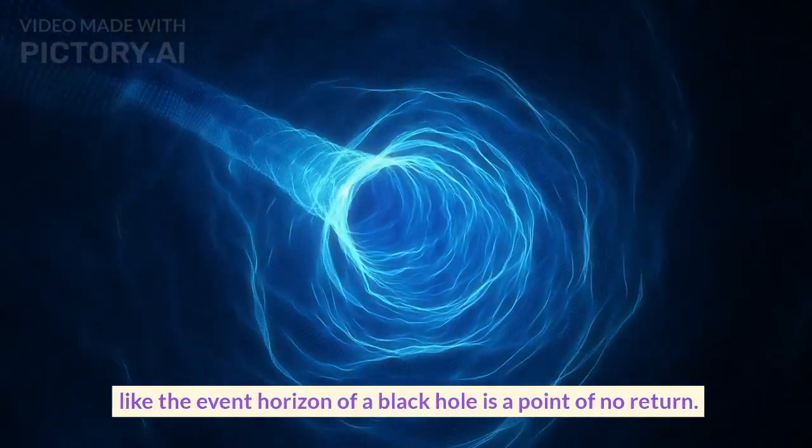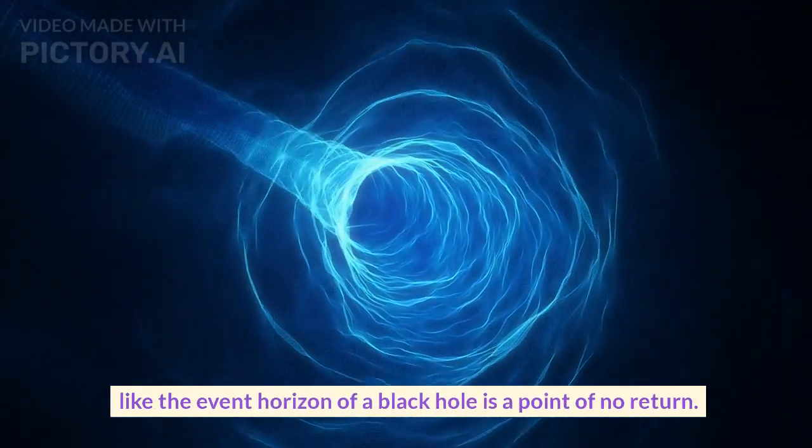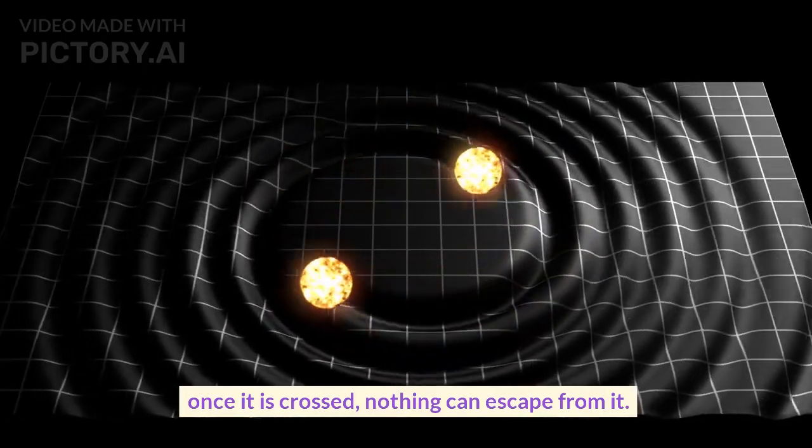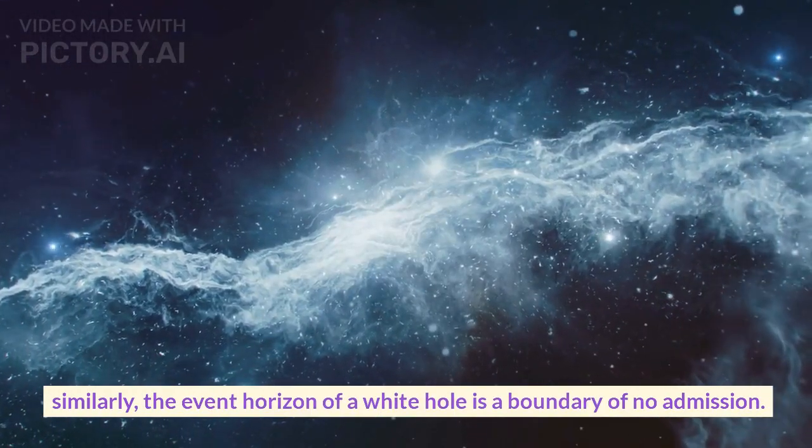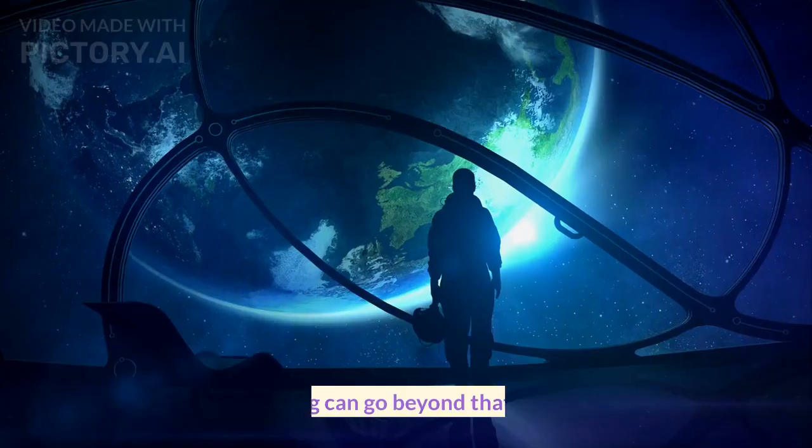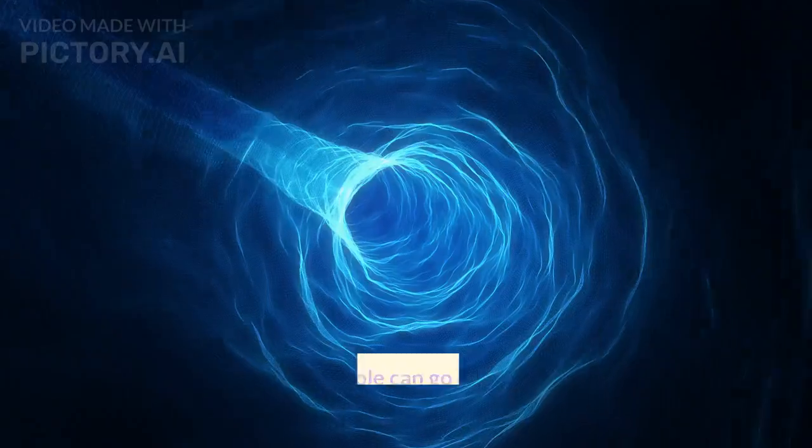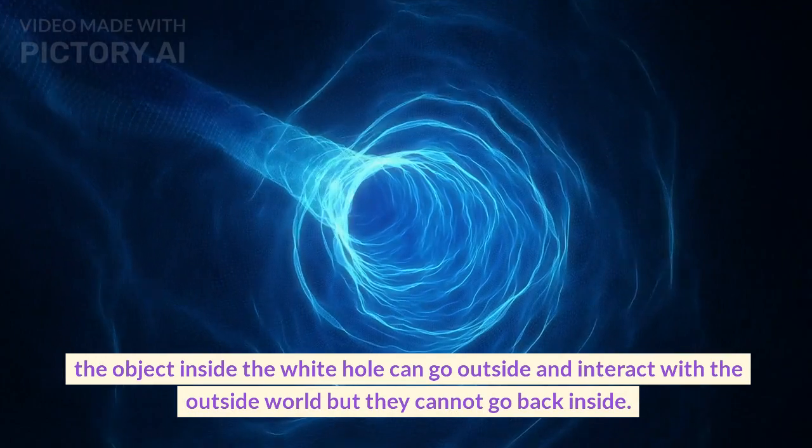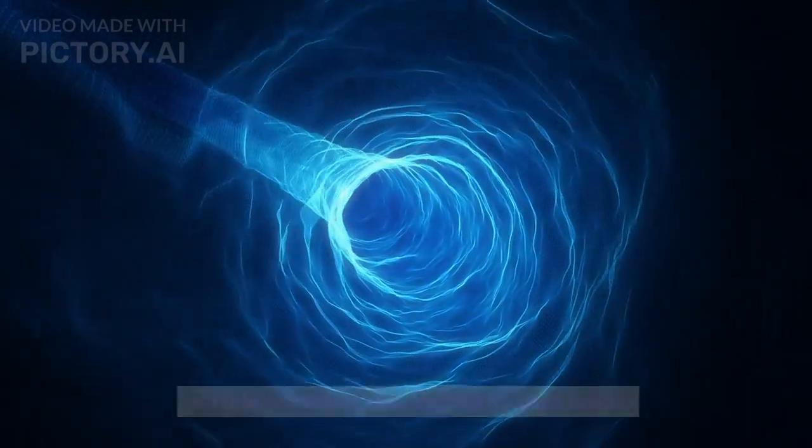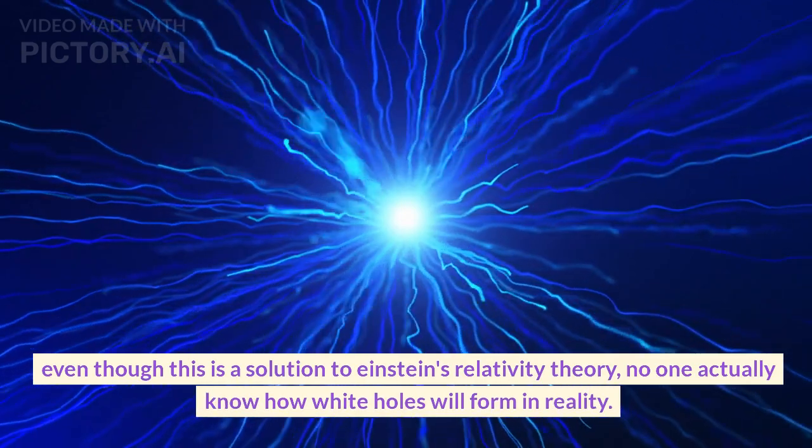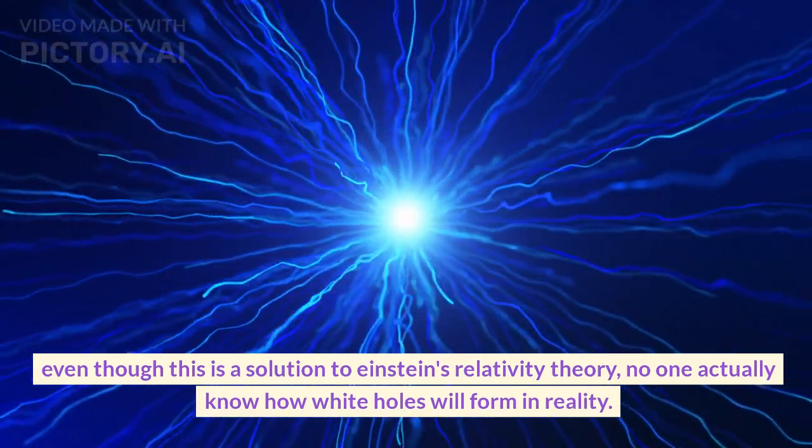Like the event horizon of a black hole is a point of no return—once it is crossed, nothing can escape from it. Similarly, the event horizon of a white hole is a boundary of no admission. Nothing can go beyond that point. The objects inside the white hole can go outside and interact with the outside world, but they cannot go back inside. Even though this is a solution to Einstein's relativity theory, no one actually knows how white holes will form in reality.